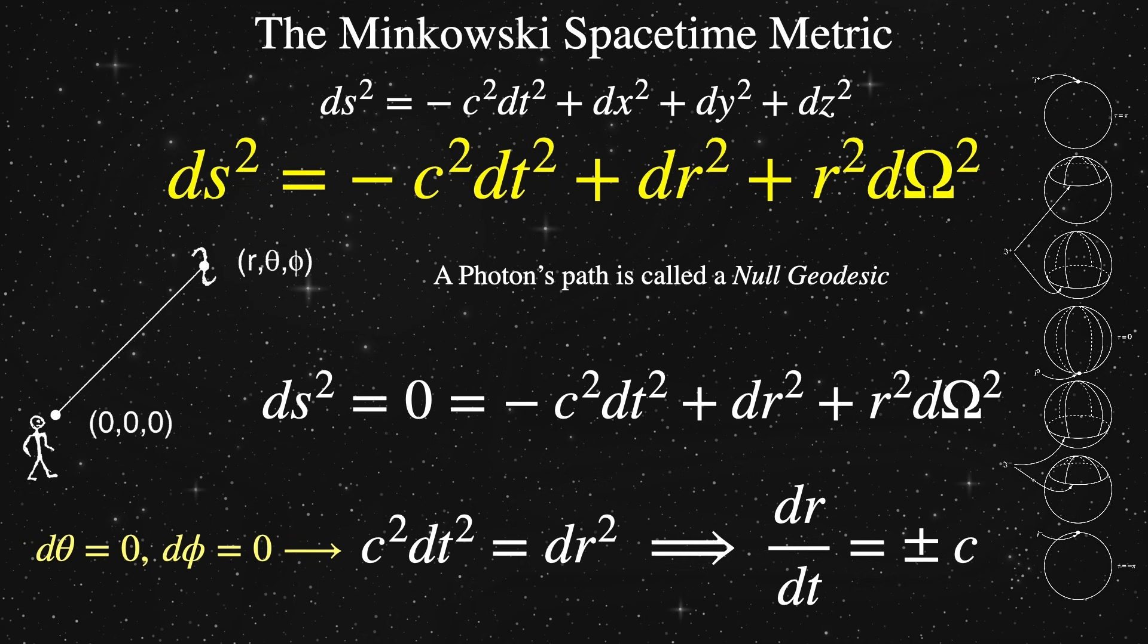In terms of our coordinates, we will require that the rate of change of that radial coordinate with respect to time must be equal to c, the speed of light. The only value of the spacetime interval ds that satisfies this condition is for it to be exactly zero. Therefore, the path of a photon is called a null spacetime interval.